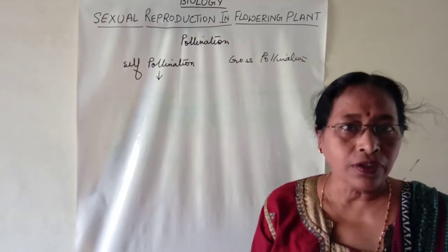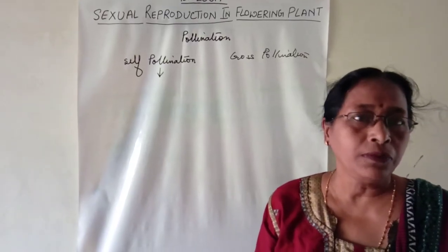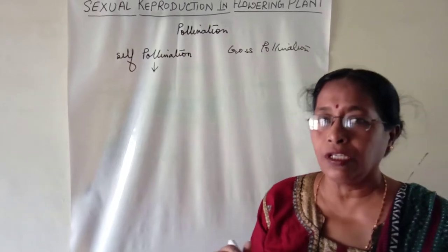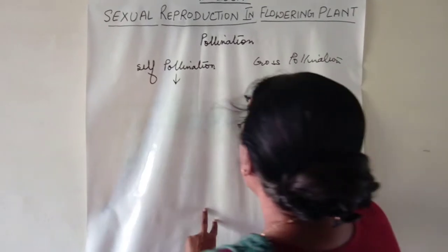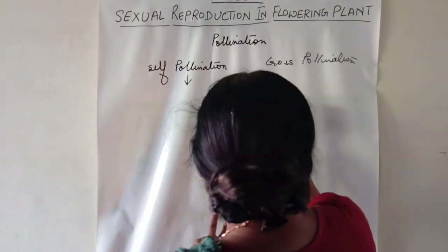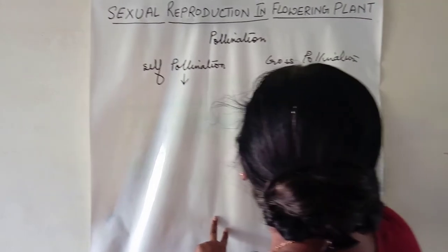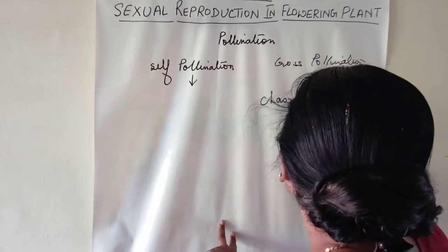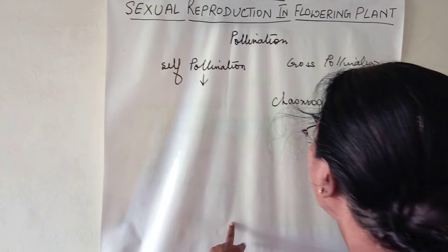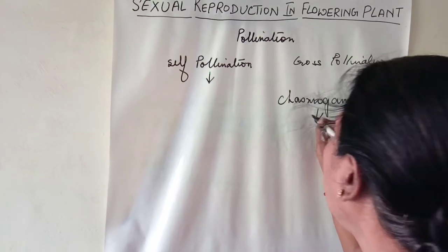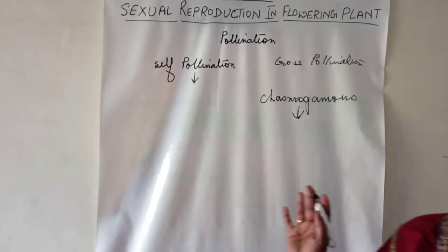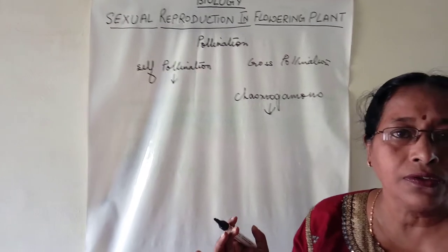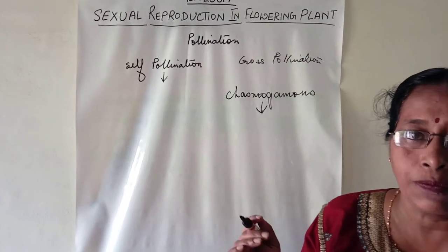In the majority of angiospermic plants, the flowers are chasmogamous. This means that the floral parts — the stamens and the pistils — are exposed.